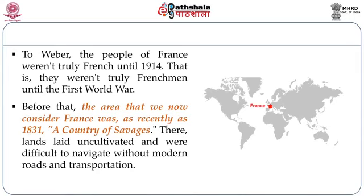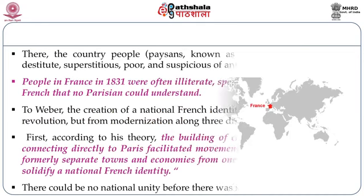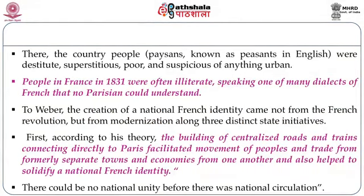In Peasants into Frenchmen, Eugen Weber describes the creation of a unified French nation. To Weber, the people of France weren't truly French until 1914 — that is, not truly Frenchmen until the First World War. Before that, the area we now call France was, as recently as 1831, described as a country of savages, with lands uncultivated and difficult to navigate without modern roads. The country people, peasants, were destitute, superstitious, poor, and suspicious of anything urban, often illiterate, speaking dialects of French that no Parisian could understand.